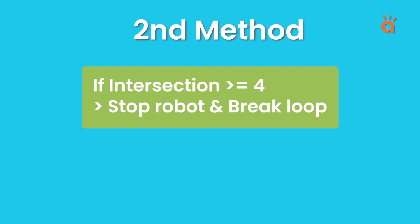If intersection is greater than equal to 4, then stop the robot and break out of the loop. Else, take a left turn. This second method is easy to understand and implement. So, we will use this one.